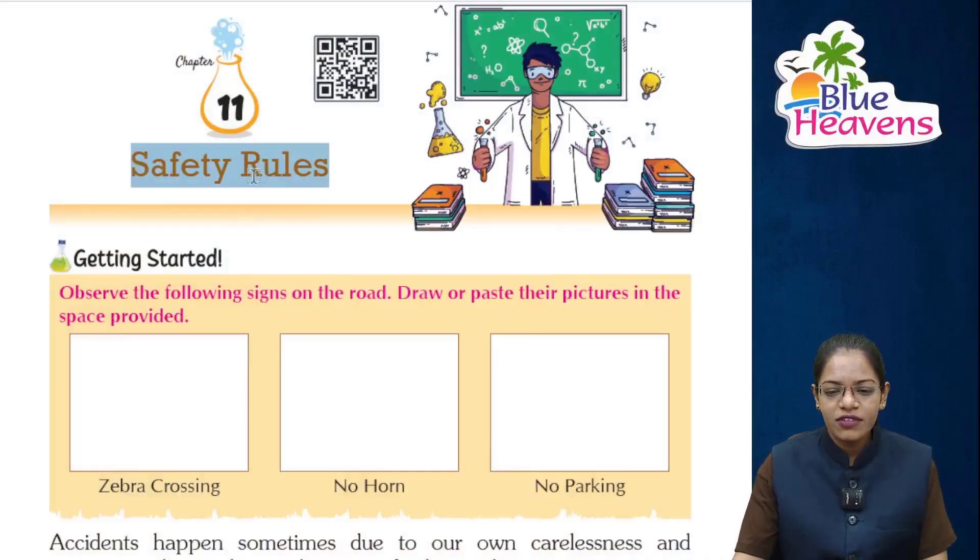We shall learn what safety rules we should follow at the playground, on the road, and at home. If we follow the safety rules, we can protect ourselves from injuries and accidents. Accidents and injuries occur due to carelessness, and we should avoid them by following safety rules.